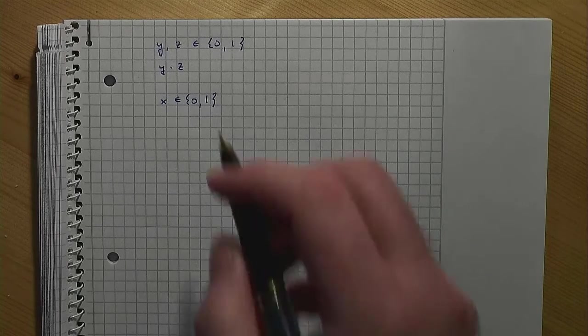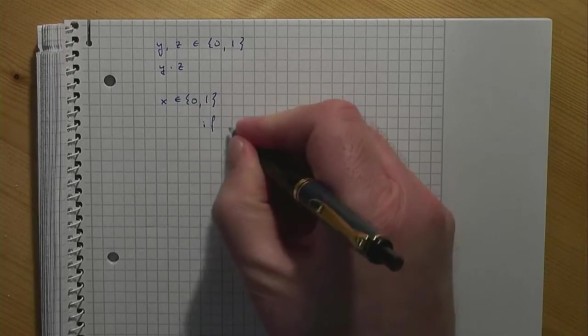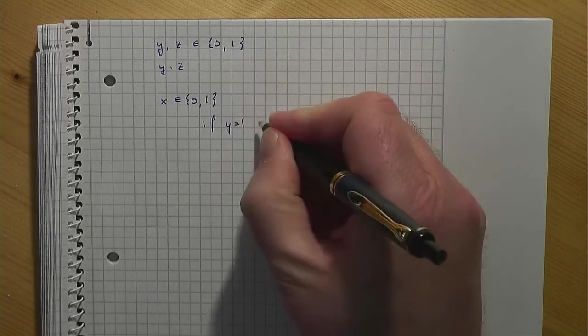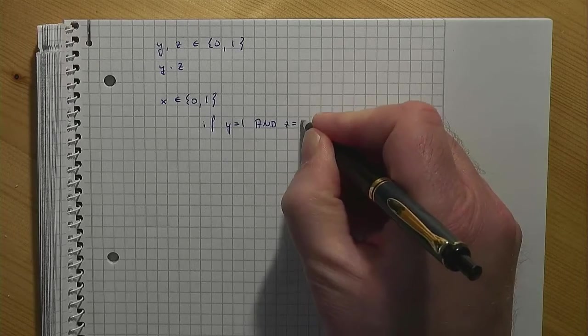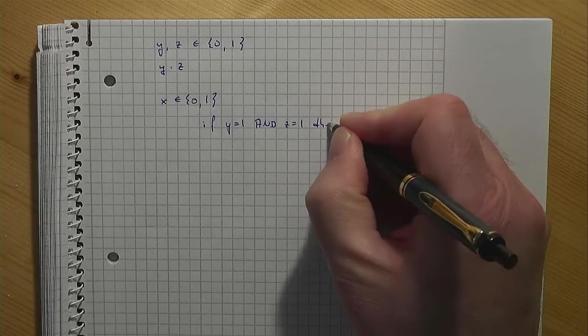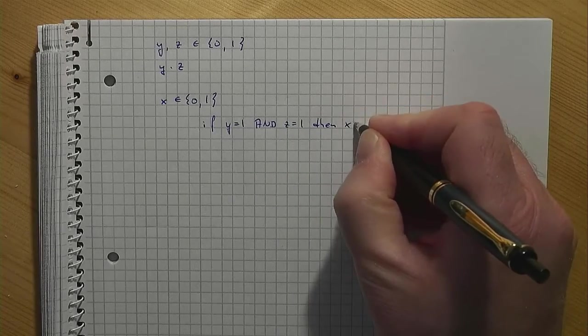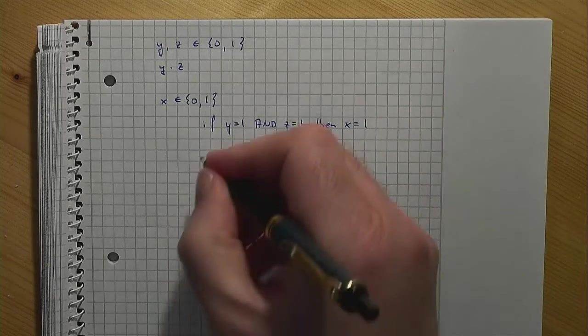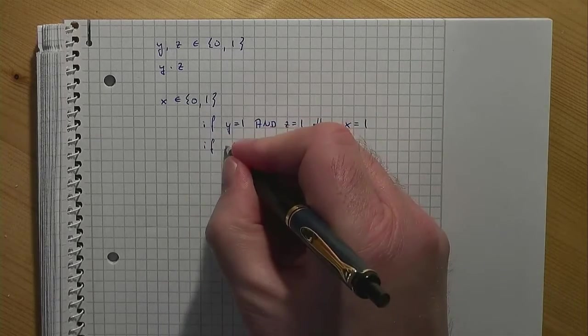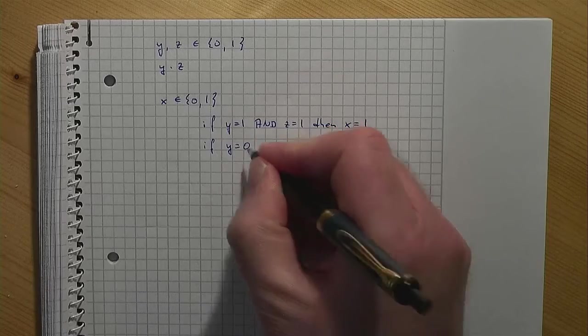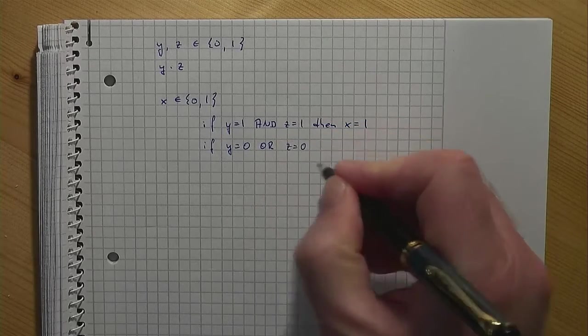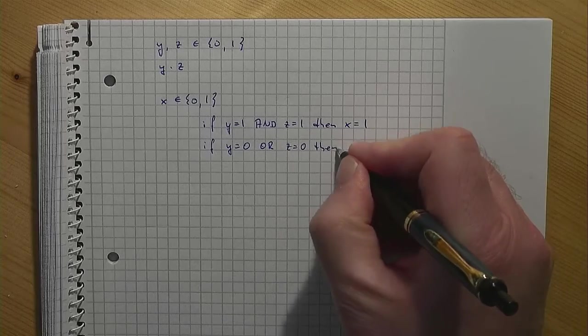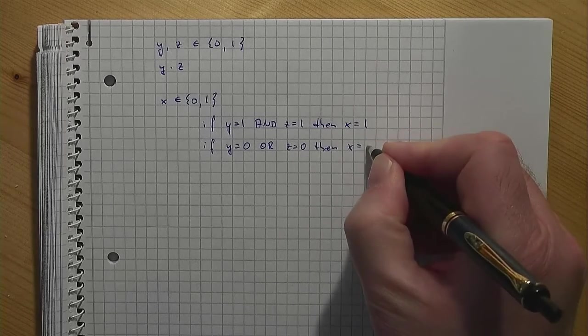As an intermediate step, we can state that if y equals 1 and z equals 1, then x should equal 0. And if y equals 0 or z equals 0, then x should equal 0.